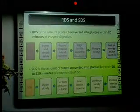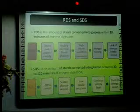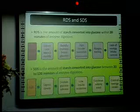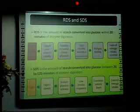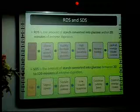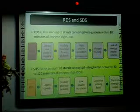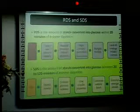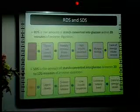On the basis of its digestibility, starch can be classified into three groups: rapidly digestible starch, slowly digestible starch, and resistant starch. Rapidly digestible starch, or RDS, is the amount of starch which is converted into glucose within 20 minutes of enzyme digestion. It is digested and absorbed rapidly in the small intestine, rapidly increasing blood glucose levels, and it cannot control energy intake. SDS is the amount of starch converted into glucose between 20 to 120 minutes of enzyme digestion, and it is digested slowly throughout the small intestine, leading to sustained glucose release, and it can control energy intake.